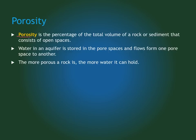This leads to a special property of aquifers called porosity. Porosity is the total volume of rock that consists of open spaces, or pores — little tiny holes in the rock — where the water is stored. The more porous the rock, the more space it has, and the more water it can hold.